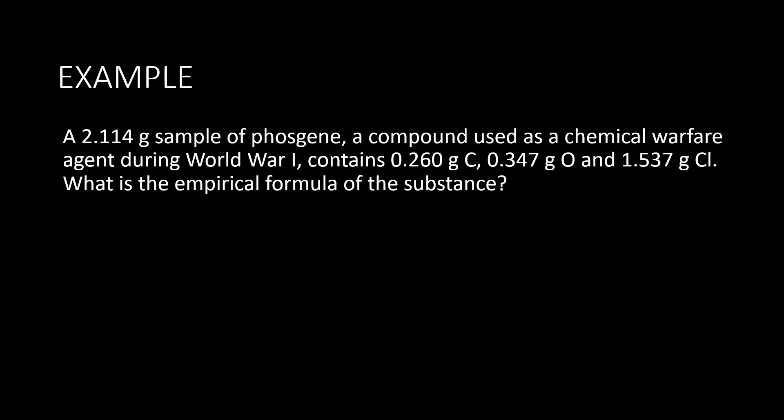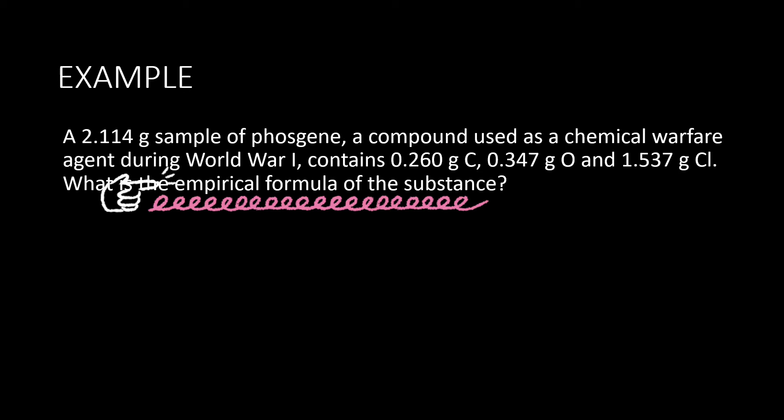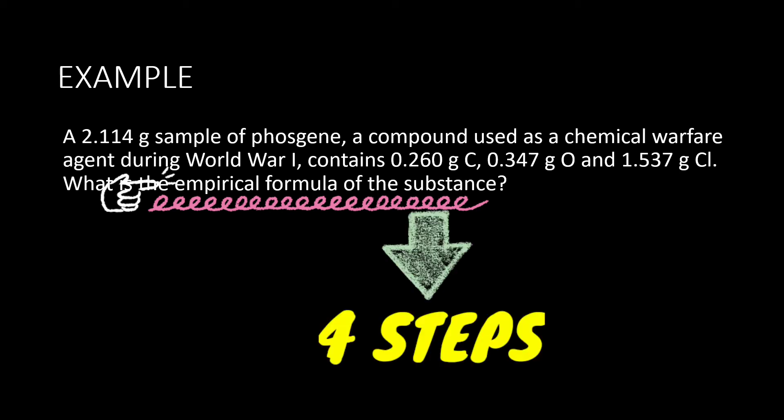In this example, you have been given a 2.114-gram sample of a substance. It consists of 0.26 grams of carbon, 0.347 grams of oxygen, and 1.537 grams of chlorine. You are asked to determine the empirical formula of this substance. We just need to follow through the 4 steps.